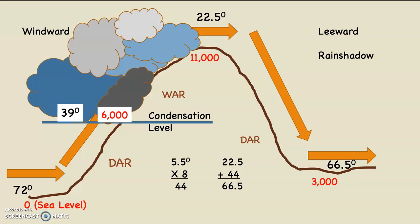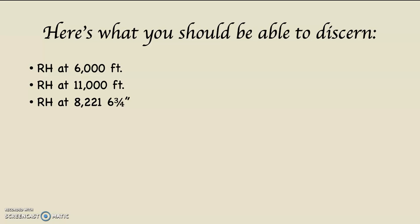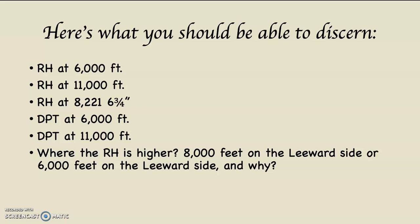So the temperature at 3,000 feet in the leeward side valley is 66 and a half degrees. Now we have all the math on here. You should be able to tell me: what the relative humidity is at 6,000 feet on the windward side, at 11,000 feet at the top of the mountain, at 8,221 feet and six and three quarters inches on the windward side, what the dew point temperature is at 6,000 feet and at 11,000 feet, and where the relative humidity is higher — 8,000 feet on the leeward side or 6,000 feet on the leeward side, and why.